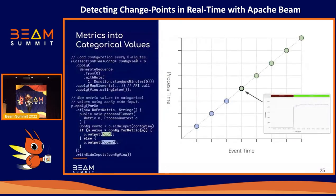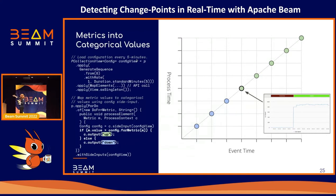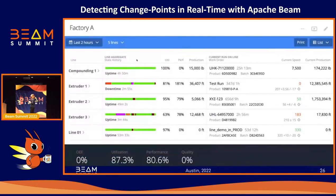We map these metrics into a categorical value using customer configuration. On the left, there's code that describes it at a high level — it's a common pattern you see in many Beam blog posts. You create a generate sequence that updates a new value every minute, map that value into a request for new configuration, turn it into a PCollectionView, load it as a side input, and then do detection: if I'm above or below my configured threshold, I make it an up event or down event. We're taking linear values and turning them into categorical values. But this is not the change detection itself — this is just how we map to the values.